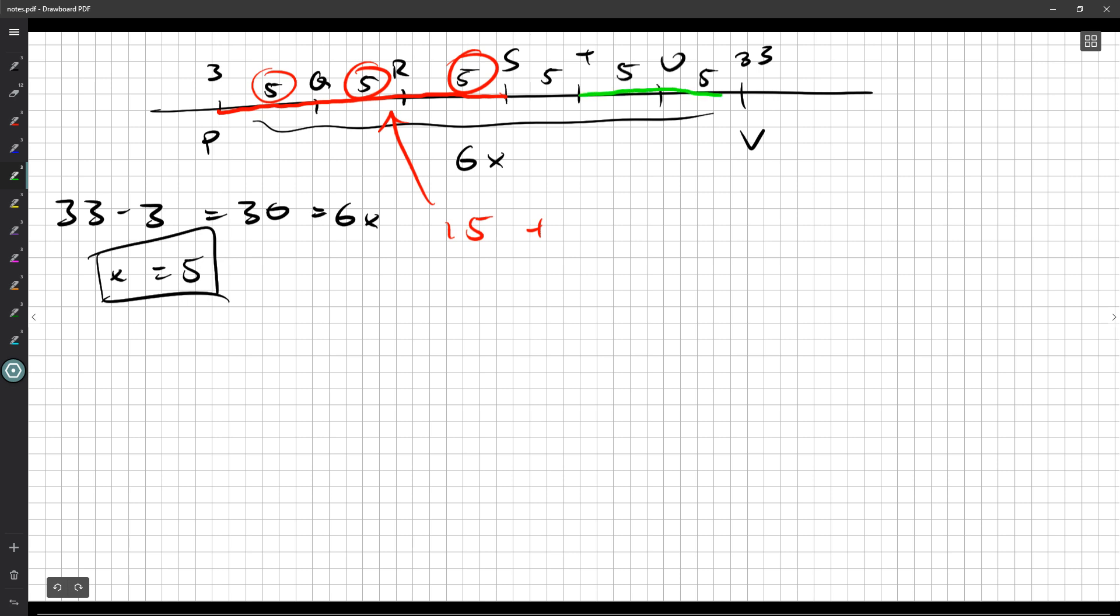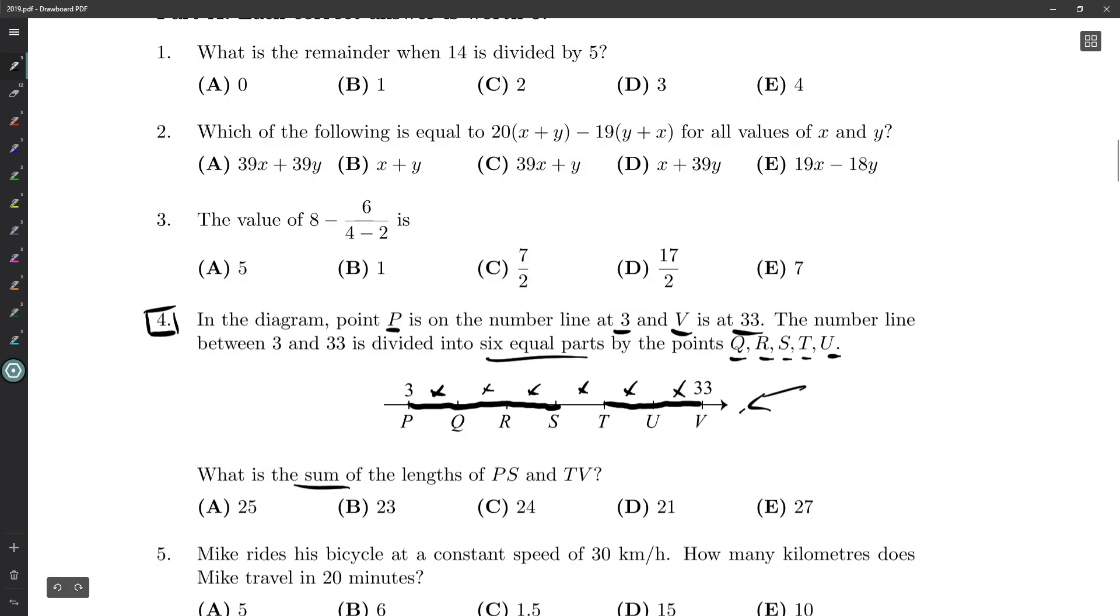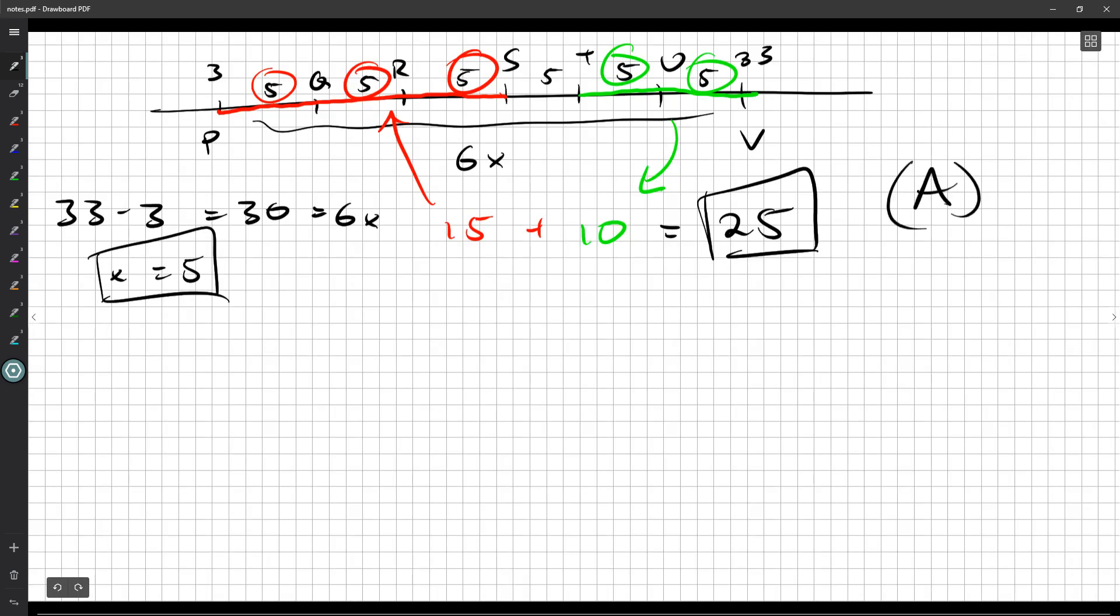Plus T to V, and that's 1, 2, 5, or 10. So we just need to calculate 15 plus 10, and that's 25. So that's the distance they're looking for. Okay. So 25 is A, and that's going to be our answer for question number 4. Question number 5, I'll see you for that next time.